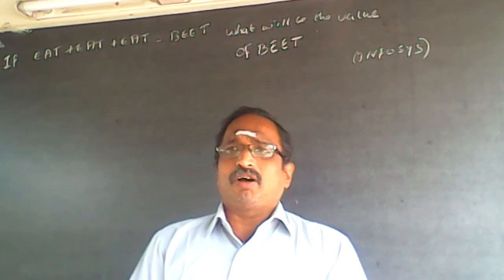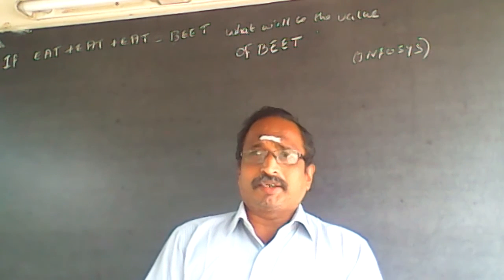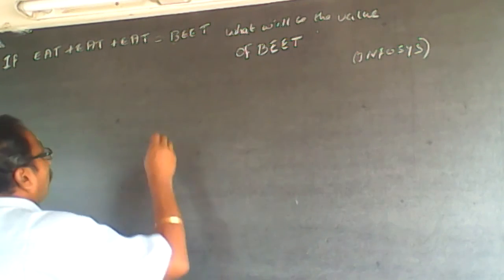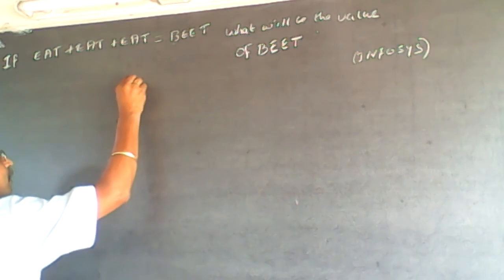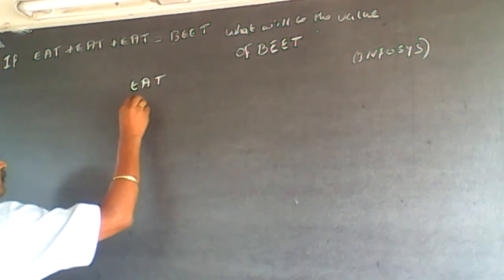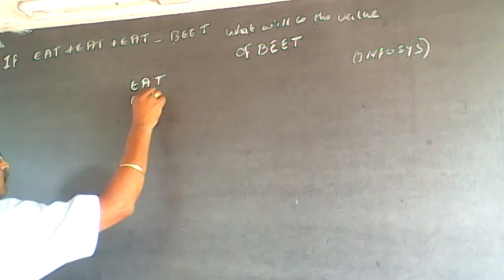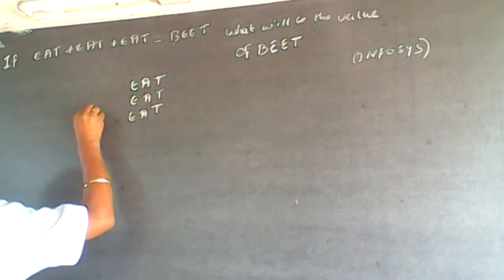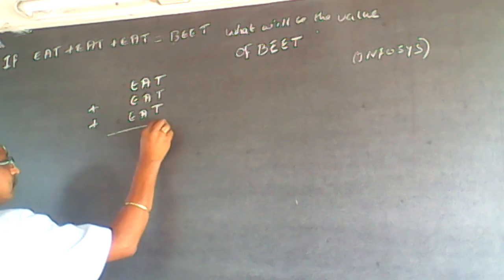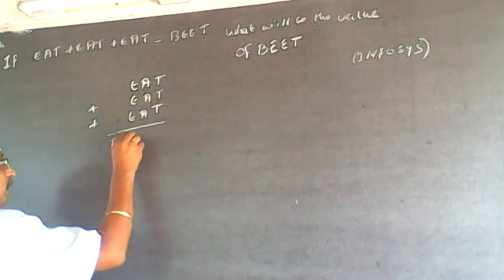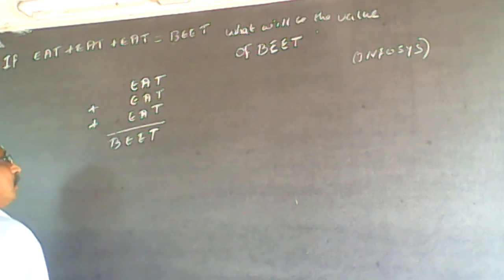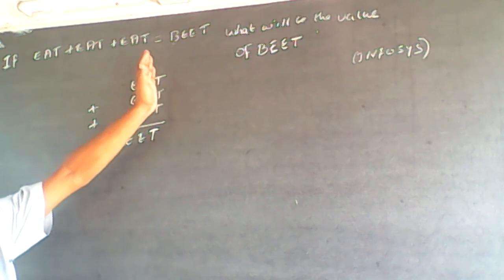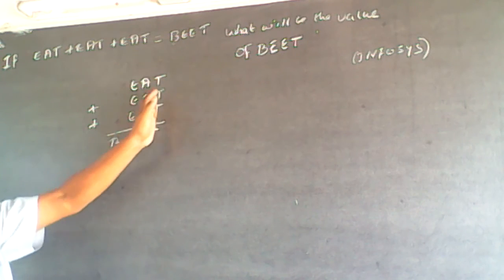So the way of doing it is to write it out — EAT plus EAT plus EAT. Now, T is occurring in the rightmost column, so we have T plus T plus T.